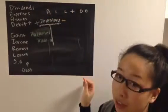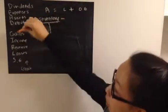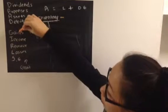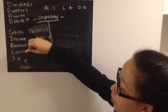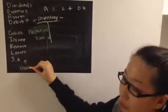And another acronym that I made up is called GIRLS, which is gains, income, revenue, losses, and stockholders' equity increase with credit.